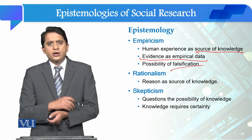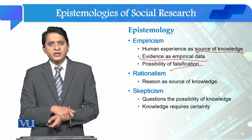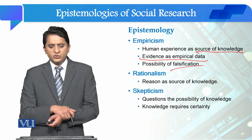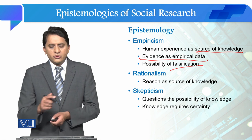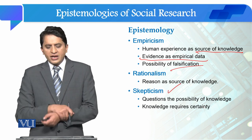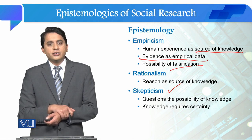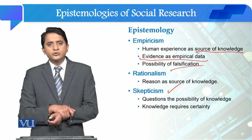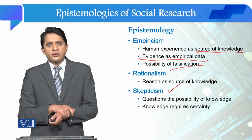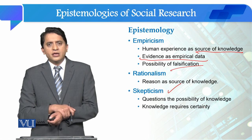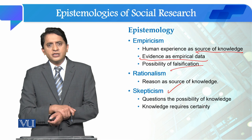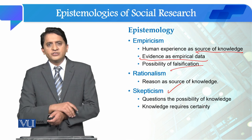The third epistemology is skepticism. This epistemology questions the possibility of knowledge, and argues that knowledge requires certainty. We observe social phenomena through the lens of skepticism — whether it exists and whether the possibility of its existence is valid or not.